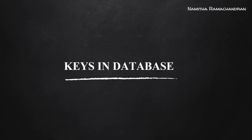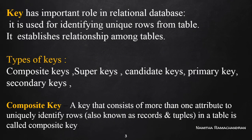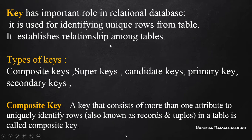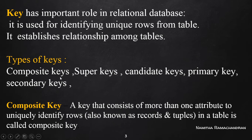Welcome back to this tutorial. We can start learning some important topics of database, starting with keys. Keys have an important role in relational databases. They are used for identifying unique rows from a table — each row indicates a record of a different entity. Keys are also used for establishing relationships among tables and implementing cross-references between them.